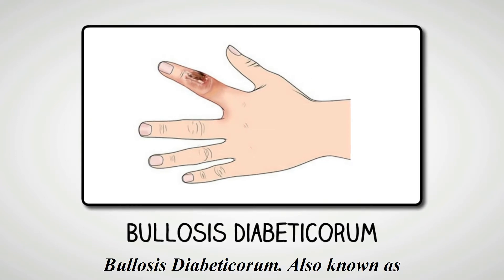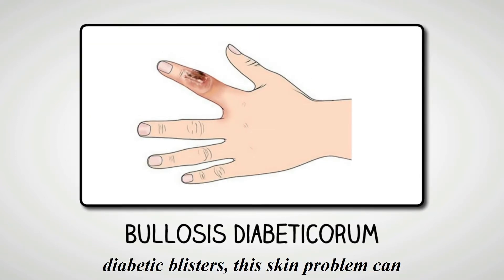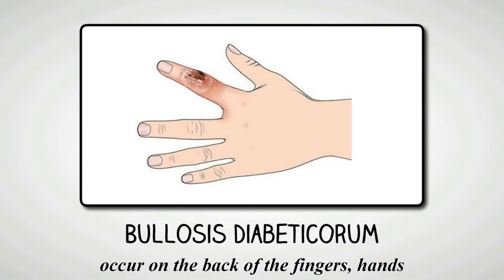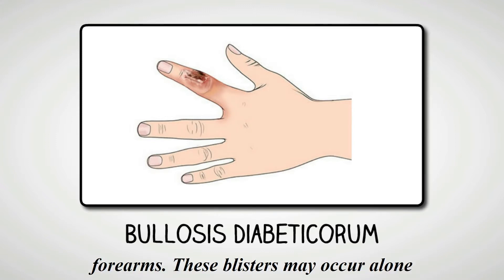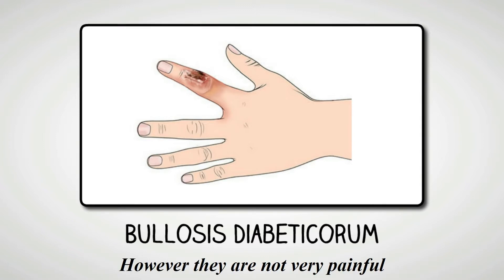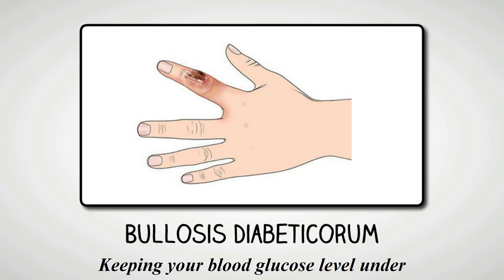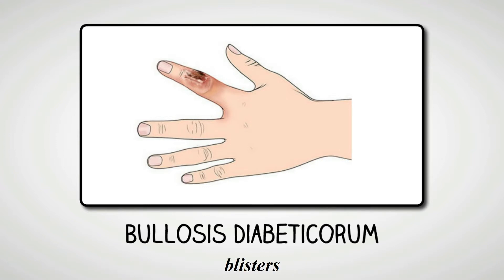Bullosis Diabeticorum. Also known as diabetic blisters, this skin problem can occur on the back of the fingers, hands, toes, feet, and sometimes on the legs or forearms. These blisters may occur alone or in patches and resemble burned blisters. However, they are not very painful. Keeping your blood glucose level under control is the only treatment for these blisters.